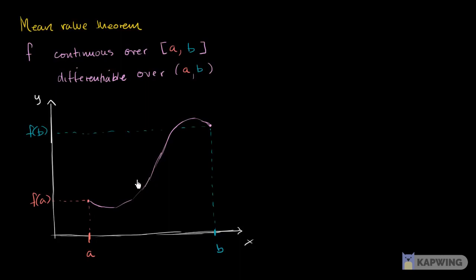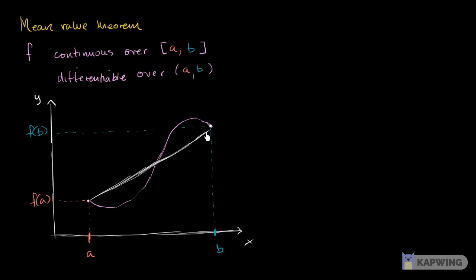Now what does that mean visually? The average change between point a and point b is going to be the slope of the secant line. So this is the secant line — think about its slope. All the mean value theorem tells us is that at some point in this interval, the slope of the tangent line is going to be the same as the slope of the secant line.